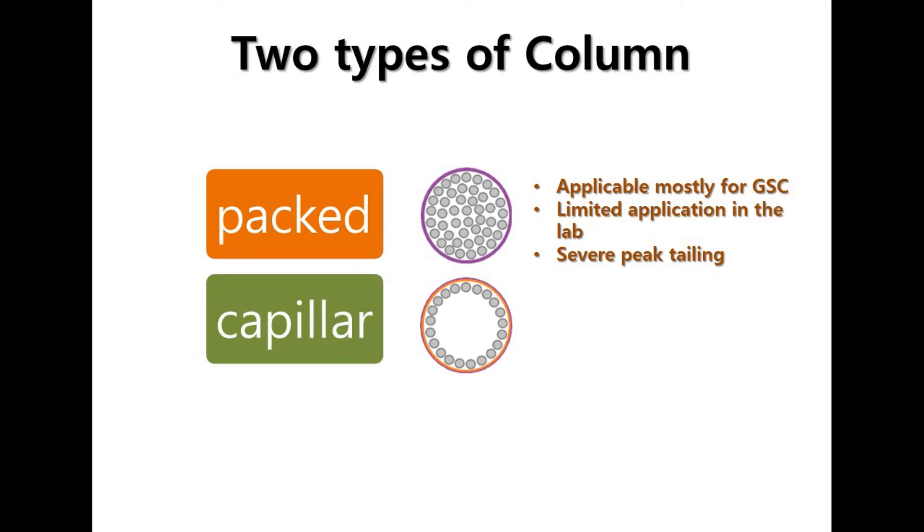In contrast, a capillary column is applicable only for GLC, gas liquid chromatography. It means this capillary column type is mostly used in laboratories. A capillary column has differentiation in four different sorts of open tubular types.